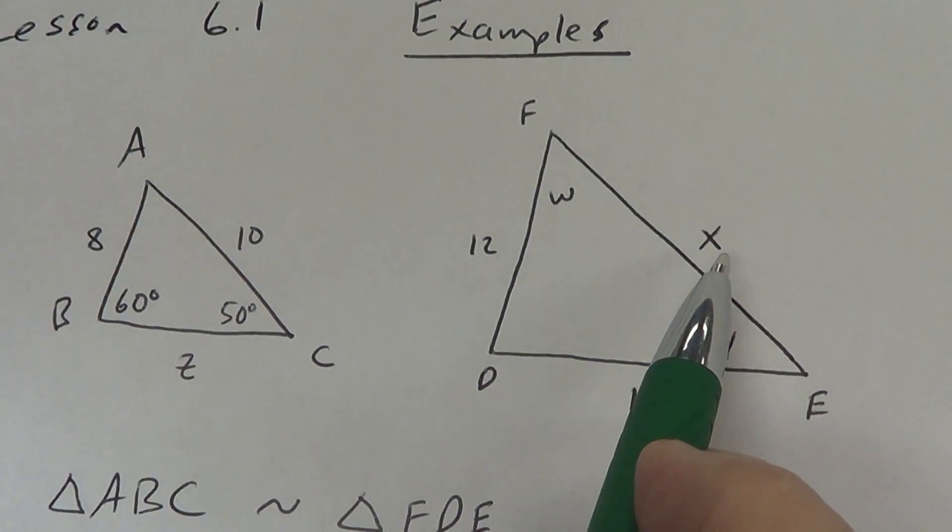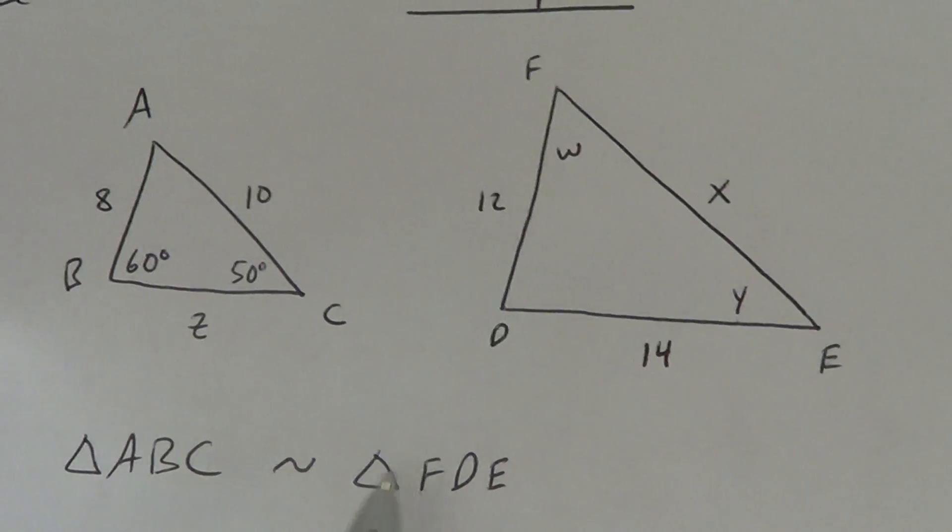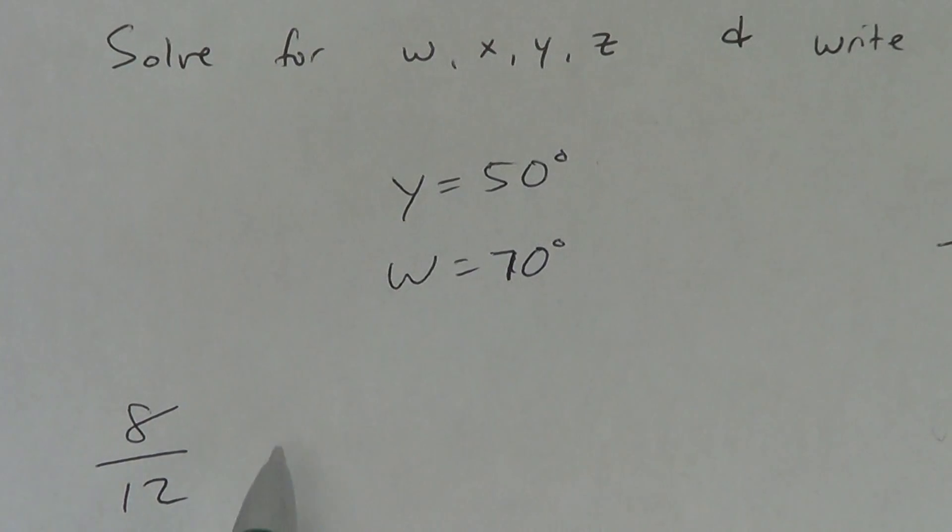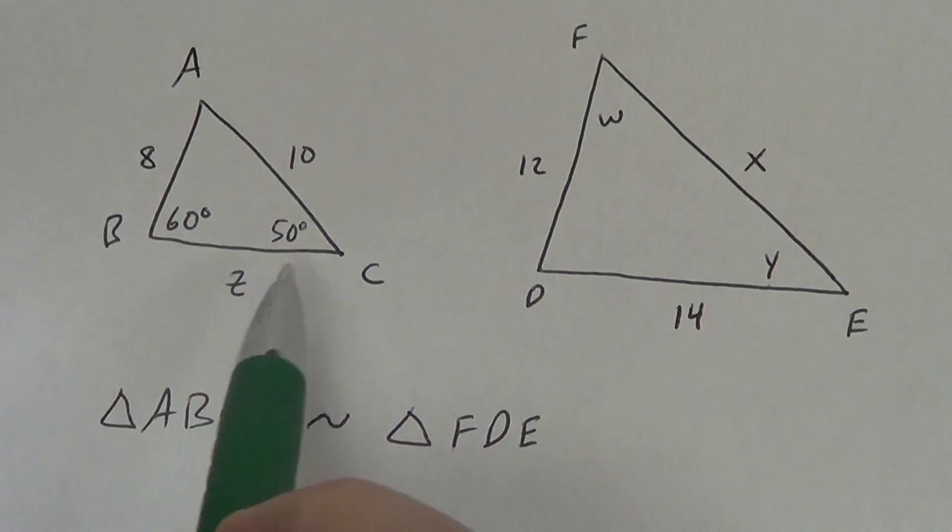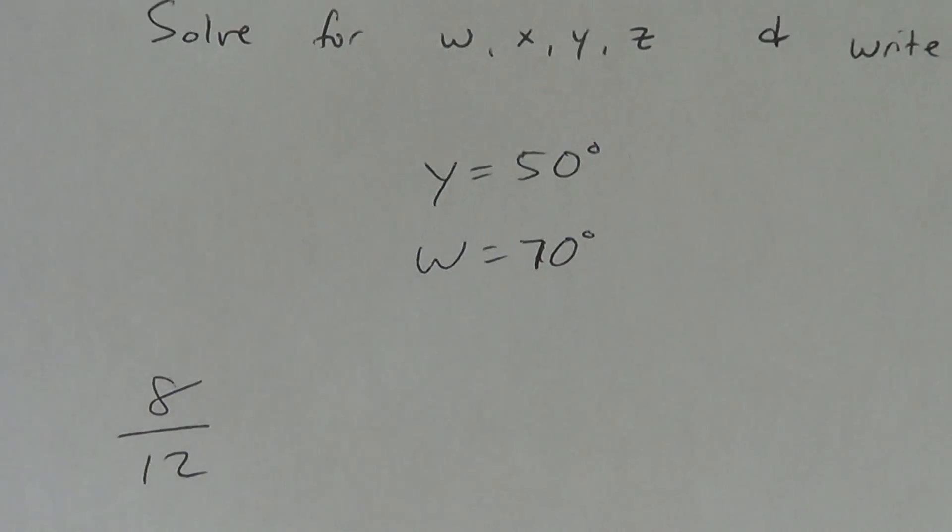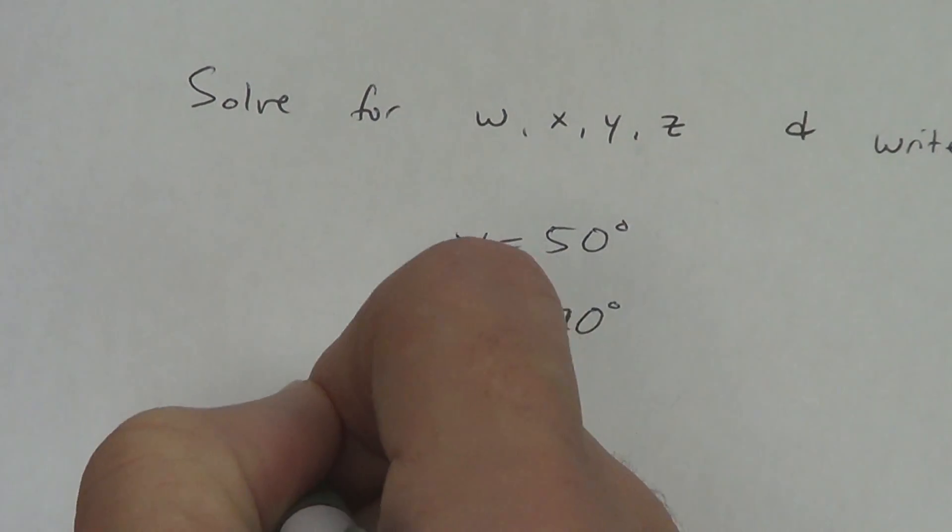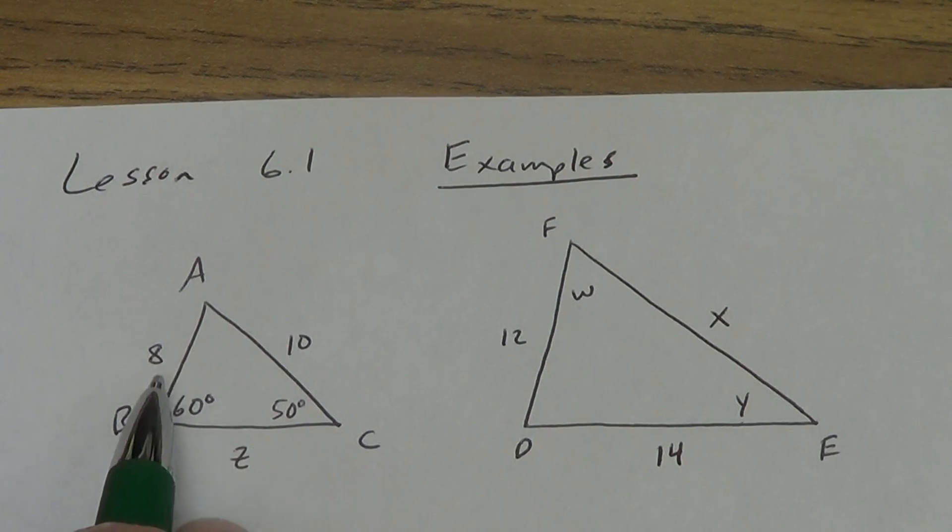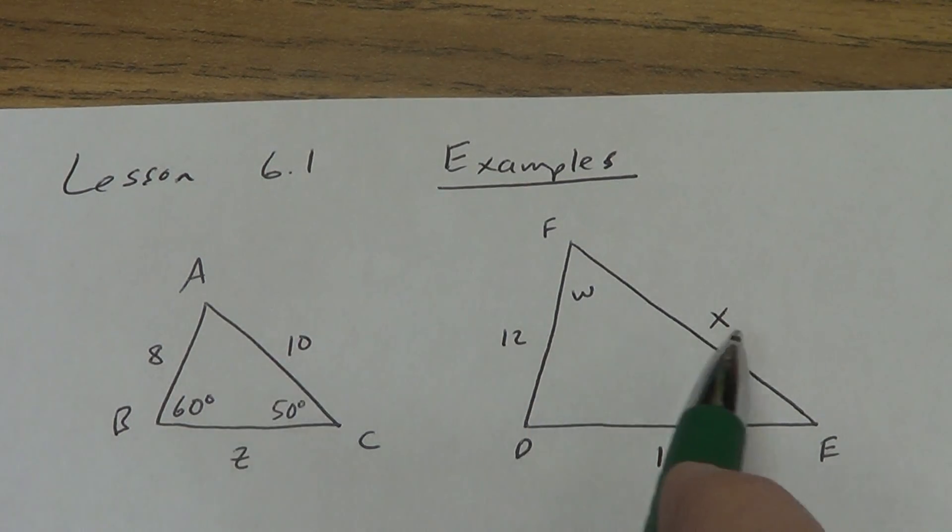I wrote that down just as a fraction. Now, you can reduce that if you want to before you move on, but you don't have to. X goes with EF. It's the first and last letter. So, that's A, C, first and last letter. So, X and 10 go together. Now, I cannot put X over 10 here. I'll get it wrong. Because the 8 and the 10 are in the same triangle. So, I need to keep them in the same spot. So, since 8 was on top, I need to put 10 on top.